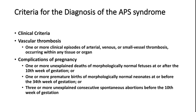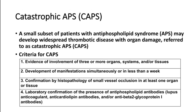Catastrophic APS means an acute emergency. A small subset of patients with APS may develop widespread thrombotic disease with multi-organ dysfunction — this is referred to as catastrophic antiphospholipid antibody syndrome. The criteria for CAPS include evidence of three or more organ or tissue involvement, with manifestations developing simultaneously or within less than one week.